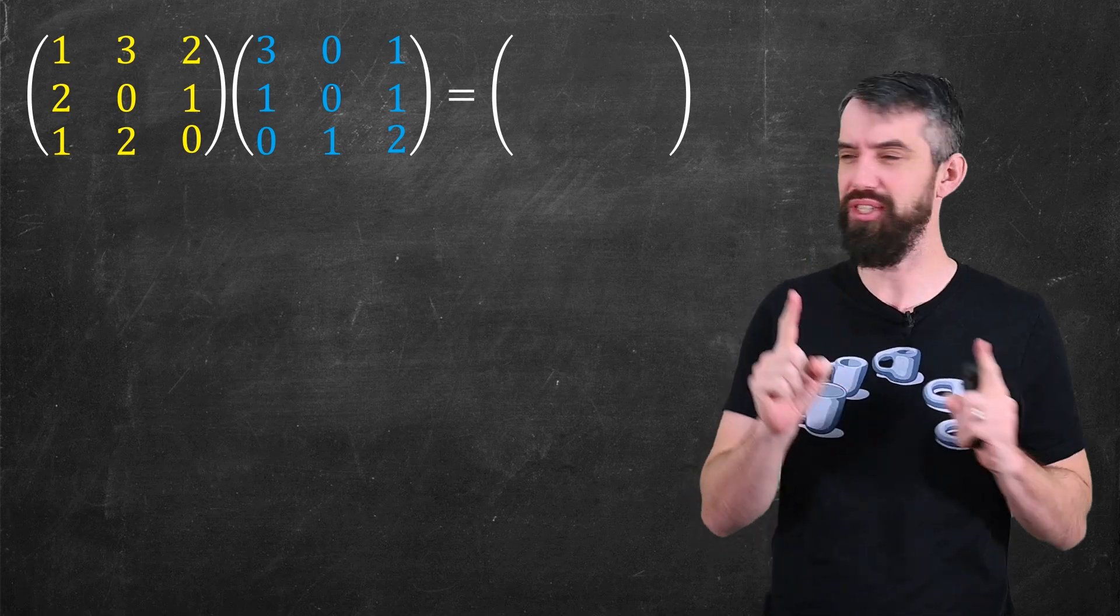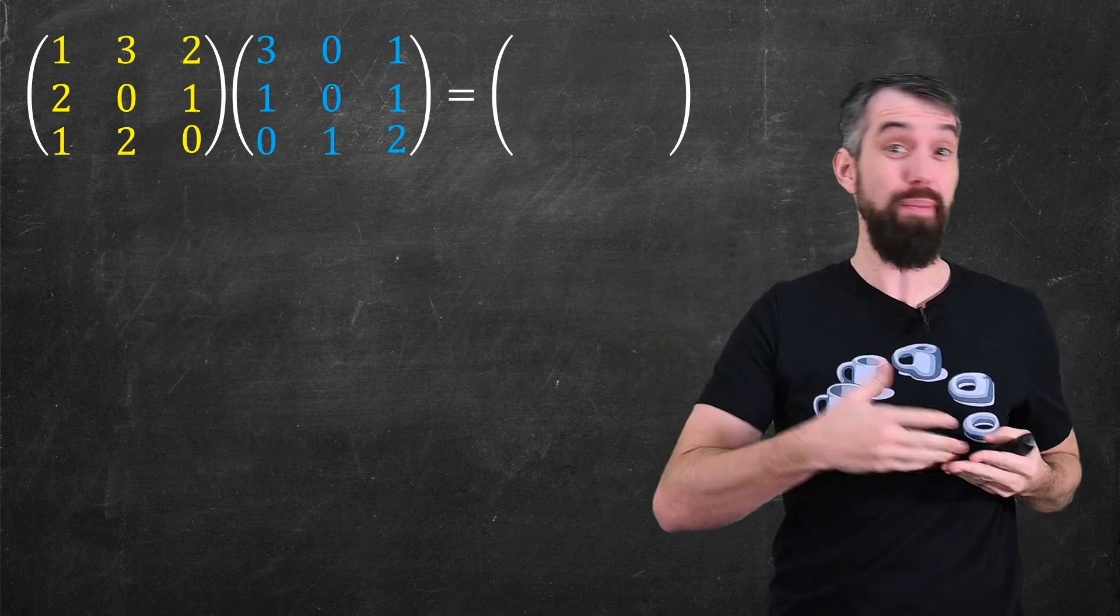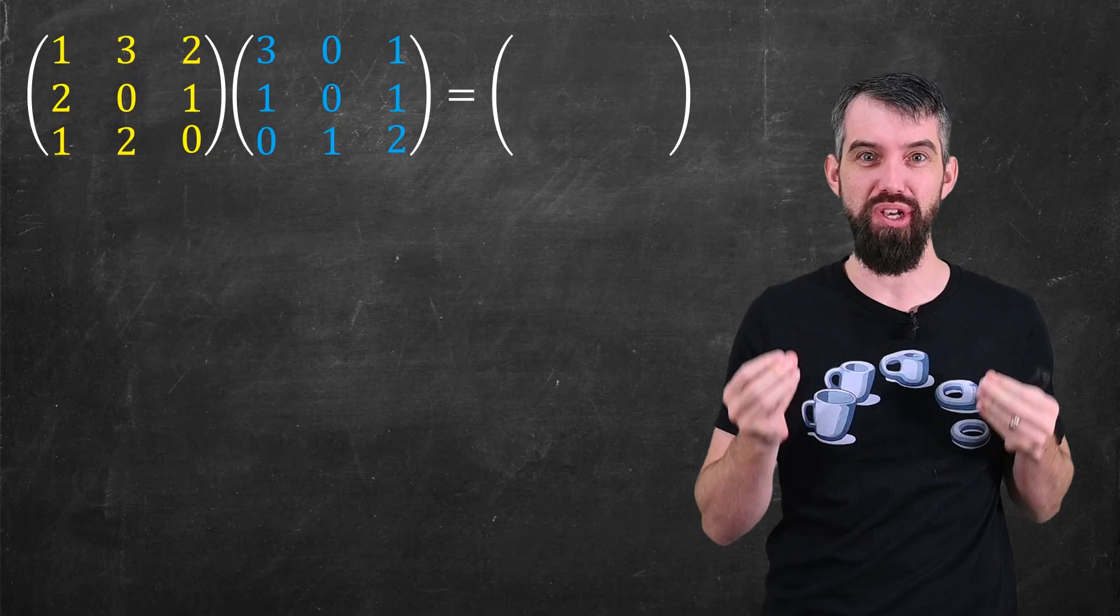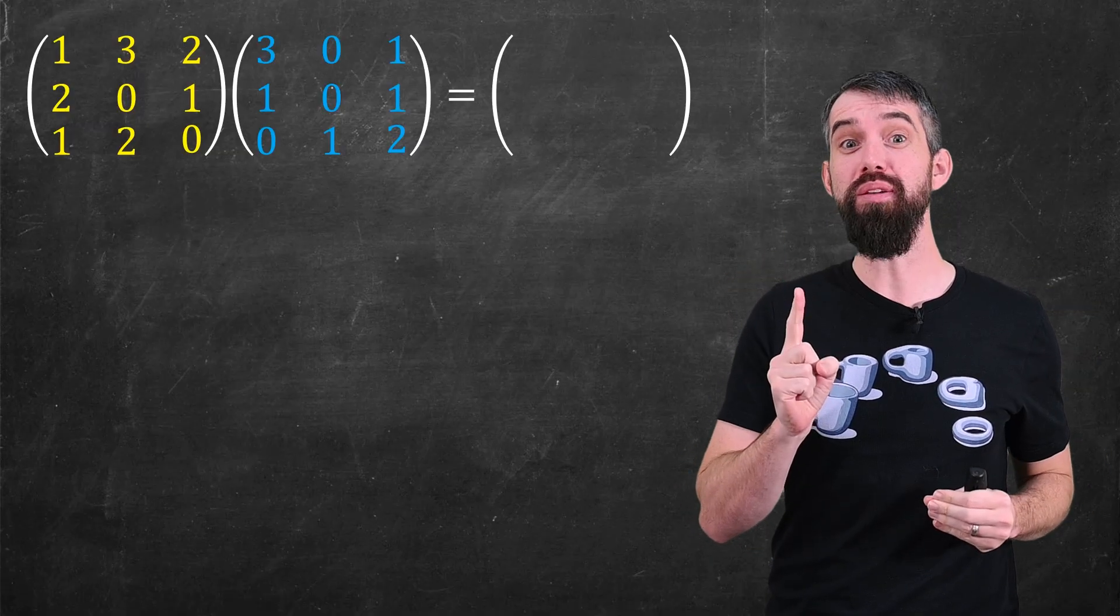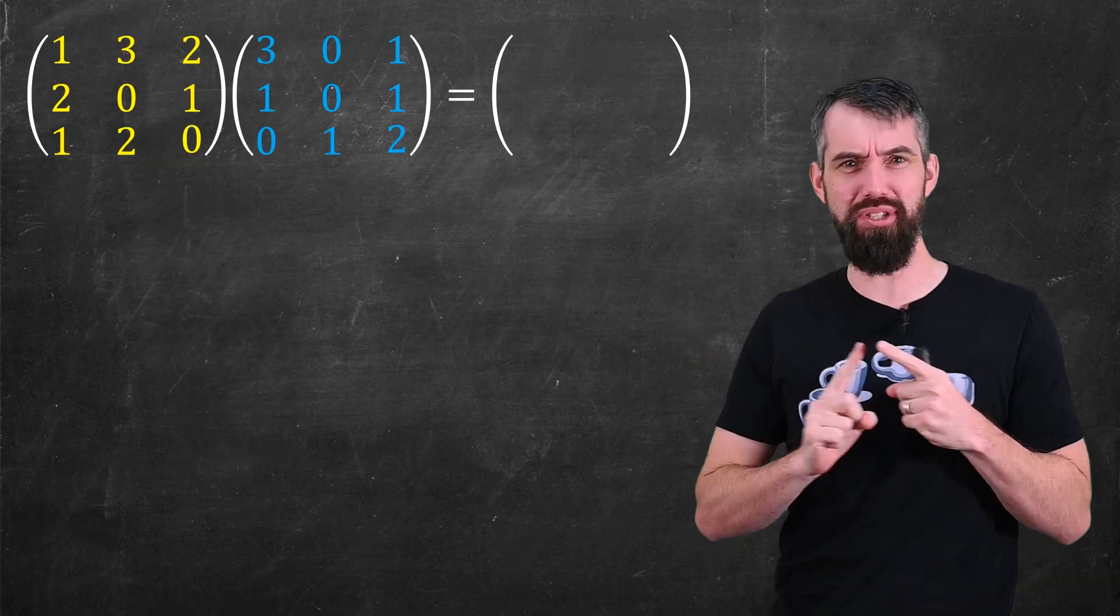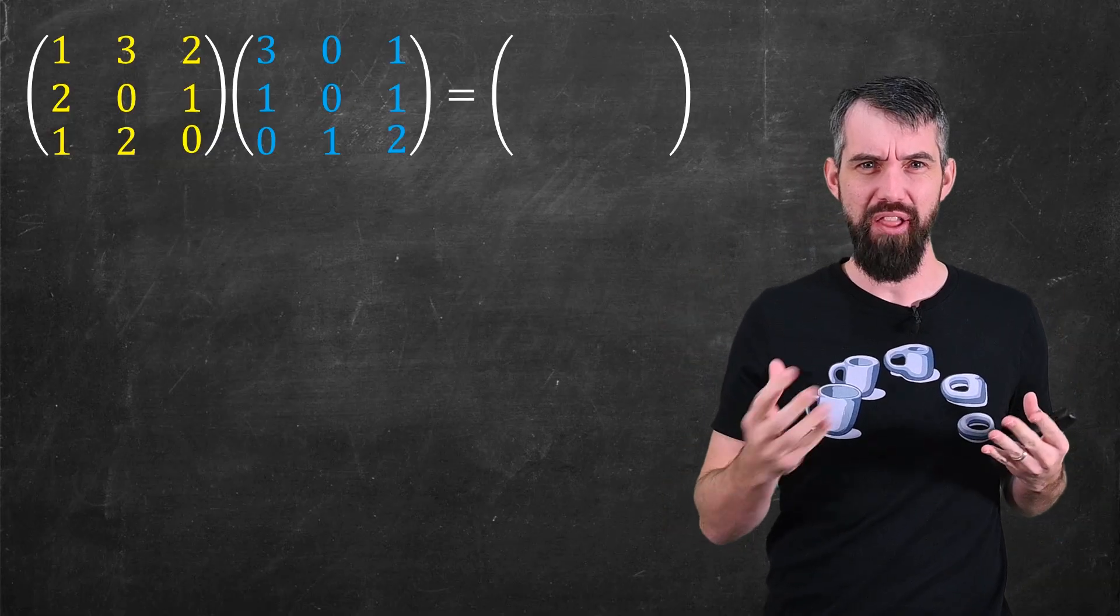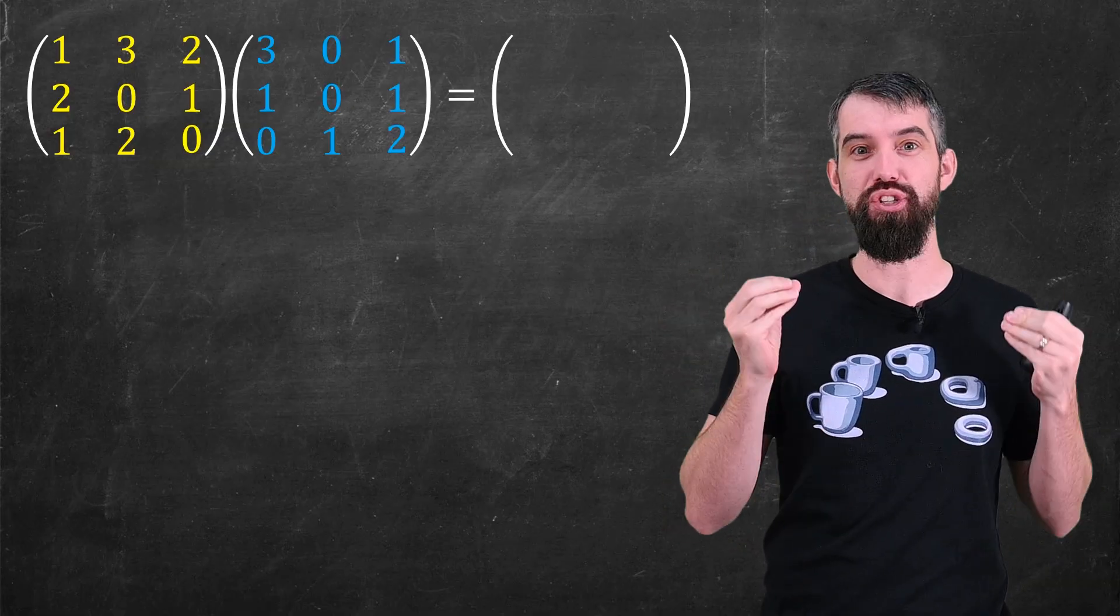If you want to multiply two matrices like these ones, then anybody who's taught any linear algebra knows the standard algorithm to do this. But that algorithm is slow, and when these matrices are incredibly large, the slowness becomes a computational problem.